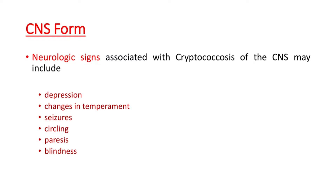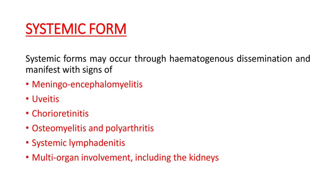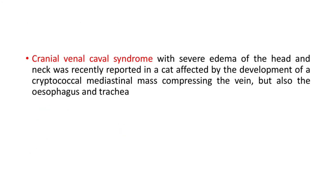The CNS form: neurologic signs associated with cryptococcosis of the CNS may include depression, changes in temperament, seizures, lymphadenitis, ocular forms, osteomyelitis, and polyarthritis. Systemic lymphadenitis and multi-organ involvement including the kidneys can occur. Cranial vena caval syndrome with severe edema of the head and neck was recently reported in a cat affected by the development of a cryptococcal mediastinal mass compressing the vein, esophagus, and trachea.